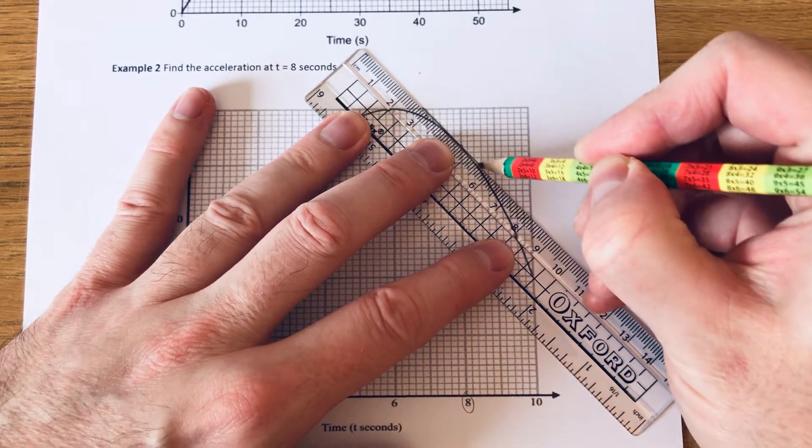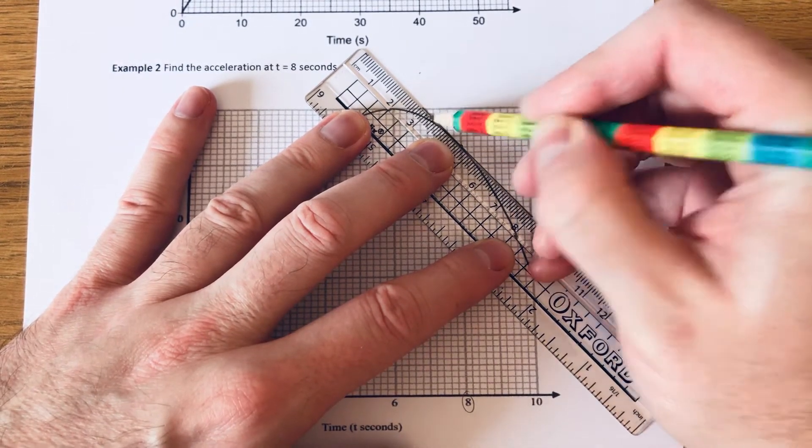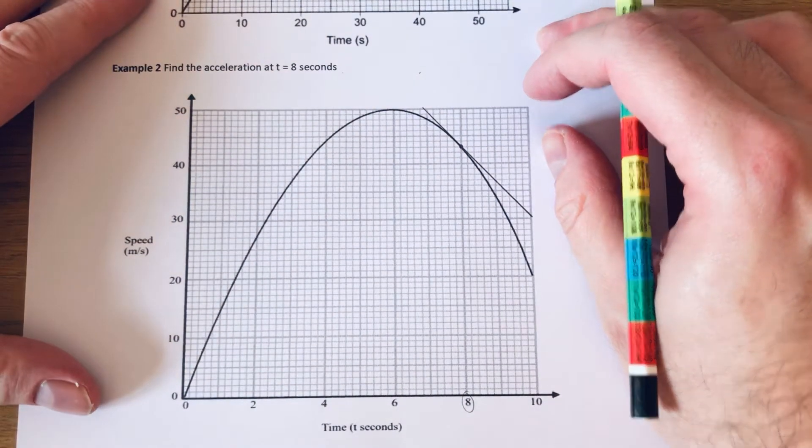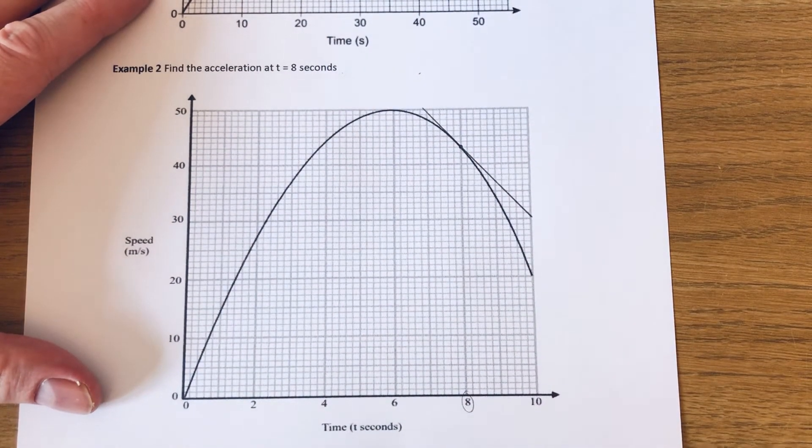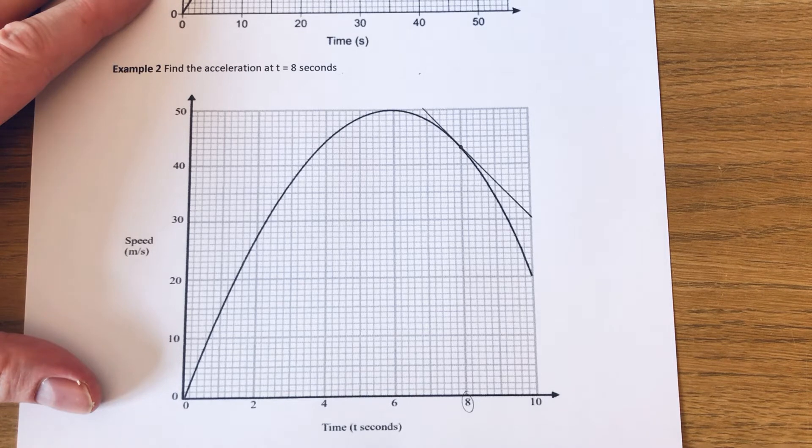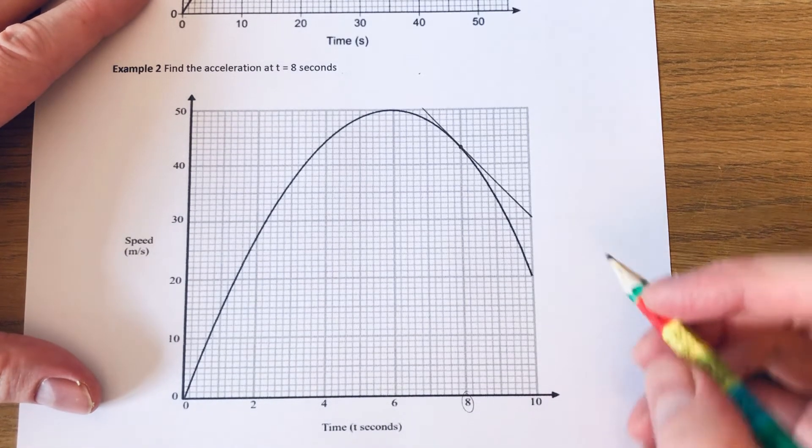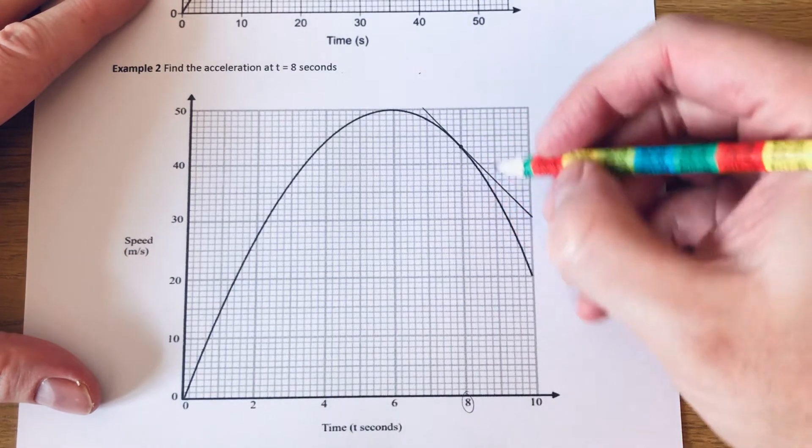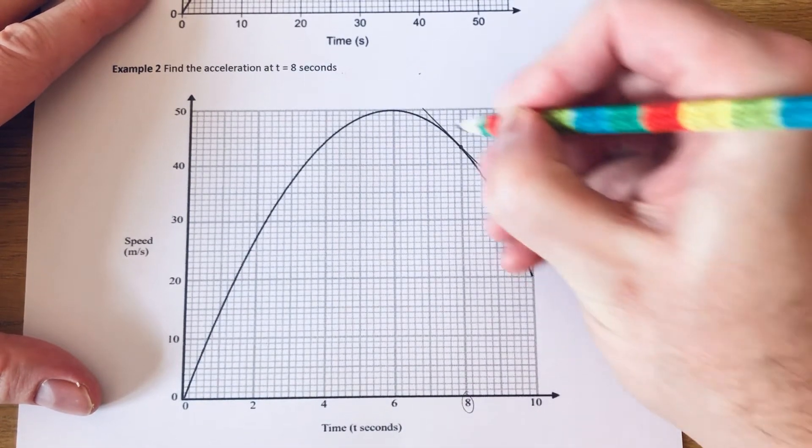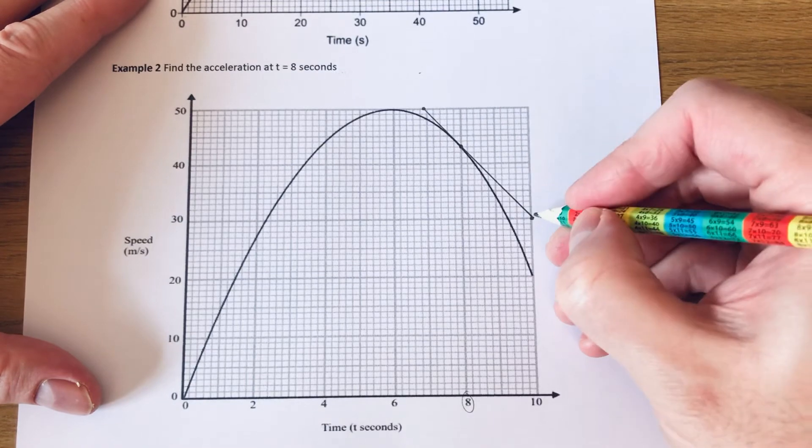So it's just touching at that point there. Okay, so again we just need to find the gradient of this straight line to find the acceleration. Okay, so again I'm going to use the two points at the bottom and the top to do our right angle triangle.